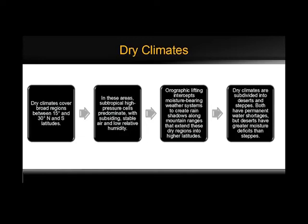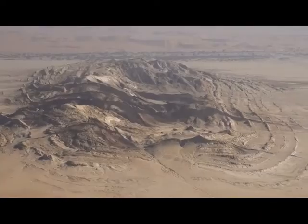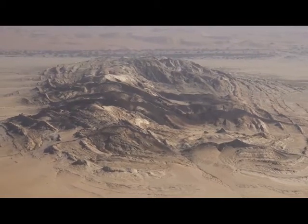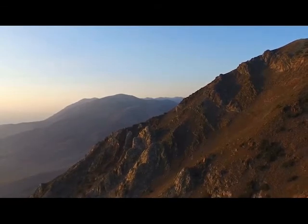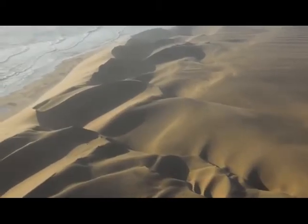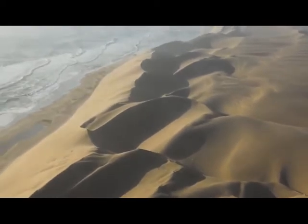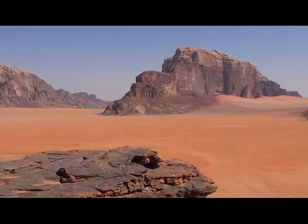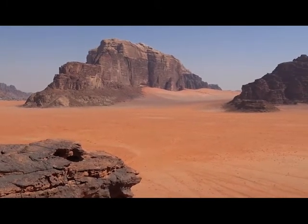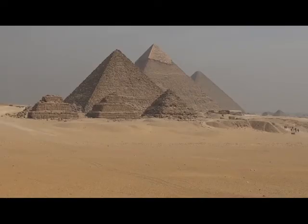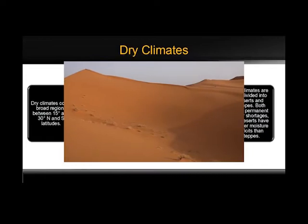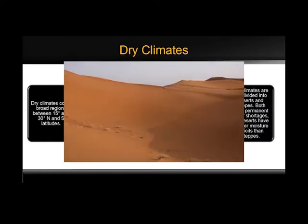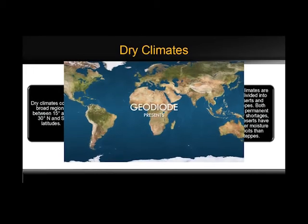The next one in your list is the dry, arid, and semi-arid climate. The dry type of climate is classified based only on precipitation, not based on temperature as well. They are Group B and have less precipitation than evaporation. Dry climate zones cover about 26% of the total land area, making it the largest type of climate on our planet.